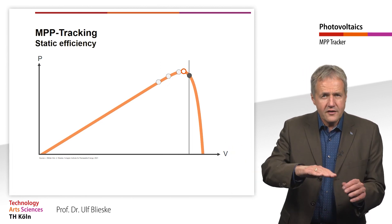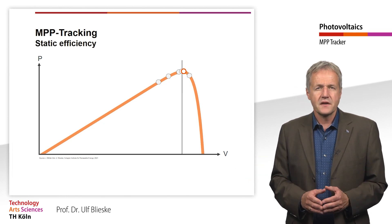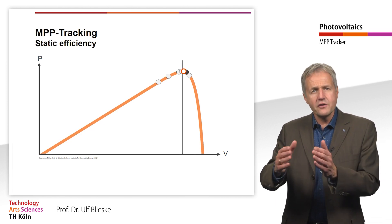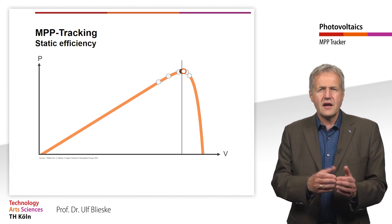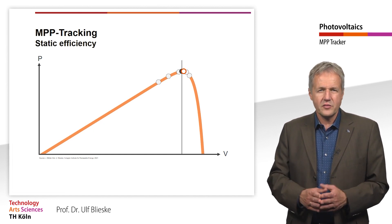If the power drops, the surge direction is changed in the opposite direction. With this method, the operating point always oscillates around the actual MPP. The size of the jumps is therefore optimized in such a way that the resulting losses are as low as possible.